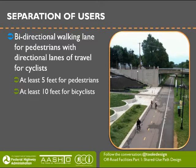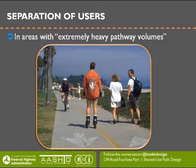Regarding separation of users, most times you deal with a mix of pedestrians by making the path a little wider. However, separation is sometimes preferred or necessary, and some jurisdictions—like Minneapolis—have a strong preference for separating pedestrians from bicyclists. When separating, use a bidirectional walking lane for pedestrians with directional lanes for cyclists, providing at least five feet for pedestrians and at least ten feet for bicyclists. This separation is especially warranted in areas with extremely heavy pathway volumes and high pedestrian volumes.